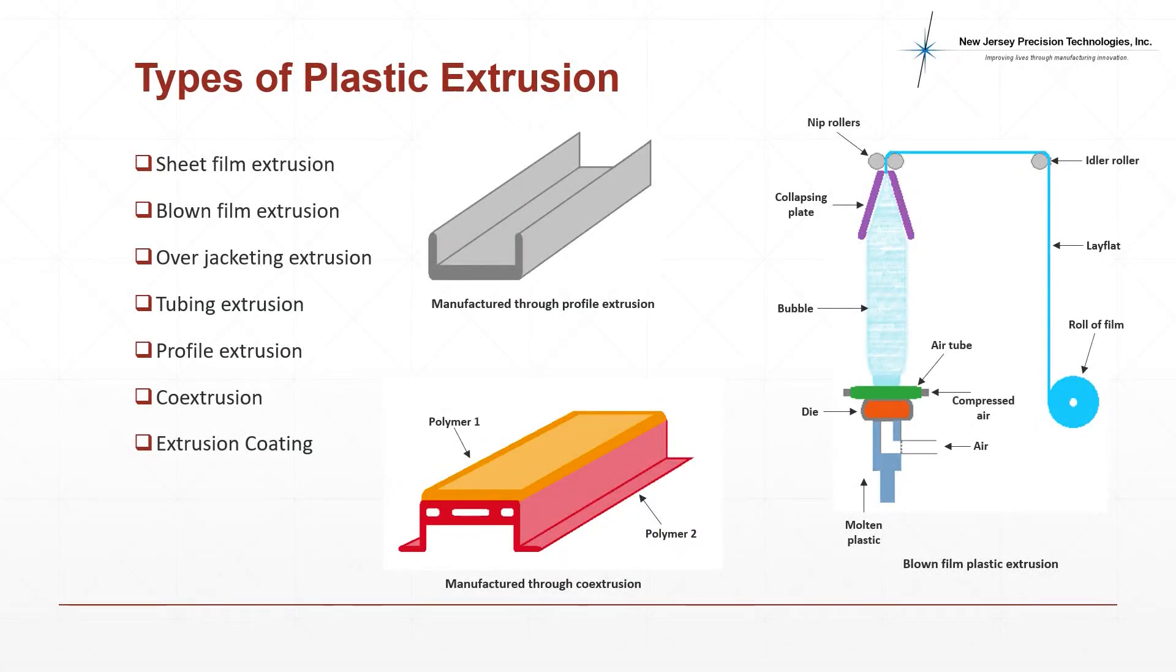There are different types of plastic extrusion depending on the application or desired final product: sheet film extrusion to manufacture films or sheets, blown film extrusion to create plastic bags, overjacketing extrusion to manufacture wire insulation, tubing extrusion to create pipes and hollow cylinders, profile extrusion to create uniquely shaped products like railings, co-extrusion where there is more than one polymer in the final extrudate, and extrusion coating when a polymer is required for coating other products.